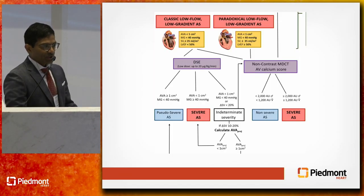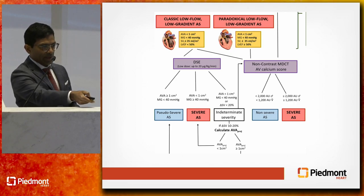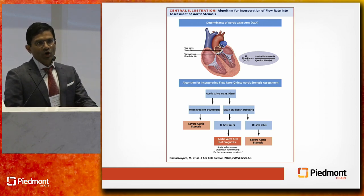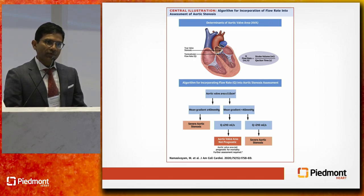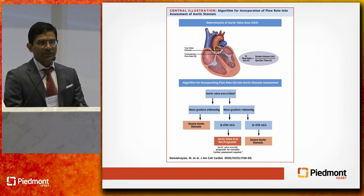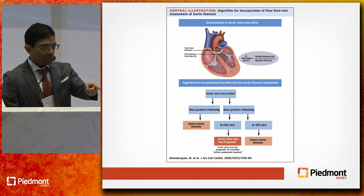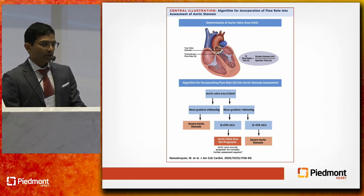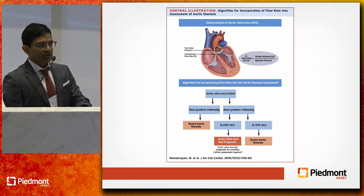To summarize: dobutamine stress echo is for low EF patients; calcium score of the aortic valve is for normal EF. Beyond that, there's a new concept coming regarding flow — defined as volume per time — calculated by taking stroke volume divided by ejection time in seconds. Investigators found that for patients with valve area less than one and mean gradient less than 40, if the flow is greater than 210 milliliters per second, this would confirm severe aortic stenosis. They used outcome data to derive this threshold, and this may be something new coming down the road.